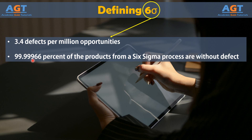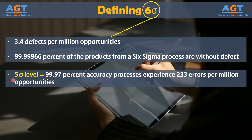At just one Sigma level below, that is at Five Sigma, or 99.97% accuracy, processes experience 233 errors per million opportunities. In simpler terms, there are going to be many more unsatisfied customers.